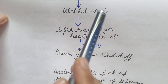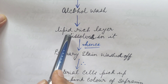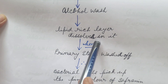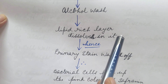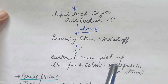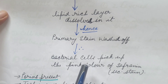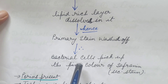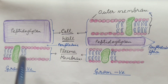During the alcohol wash, the lipid-rich outer membrane dissolves because lipid dissolves in alcohol. Hence the primary stain trapped by this lipid-rich layer is also washed off along with it. When the secondary stain — safranin — is then applied, it is trapped by the peptidoglycan layer present next to the outer membrane. So bacterial cells pick up the pink color of the safranin. Hence, when gram negative bacterial cells are observed under the microscope, they appear pink in color.